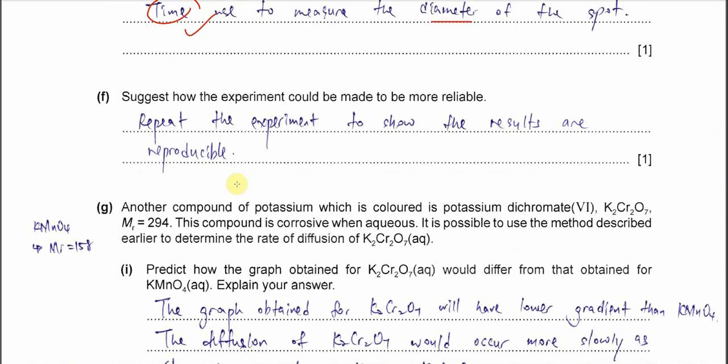Part F: suggest how the experiment could be made to be more reliable. You need to repeat the experiment to show the results are reproducible. Repeat the whole experiment with the same interval, see whether you can get back the same diameters or not. This makes it more reliable. If you can get back the diameter with very close values to what's obtained in Table 2.1, then it's reliable, it's reproducible.